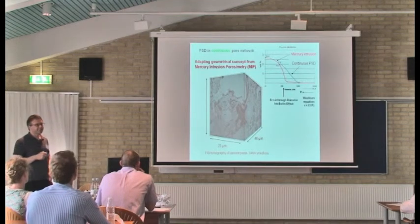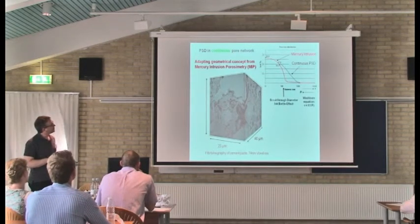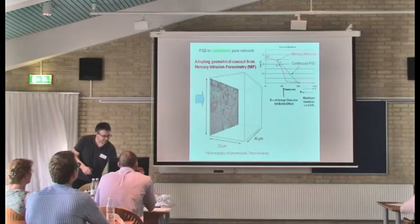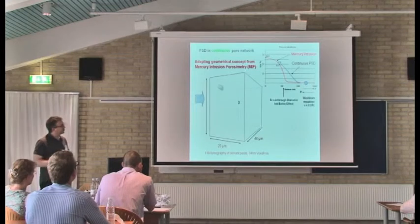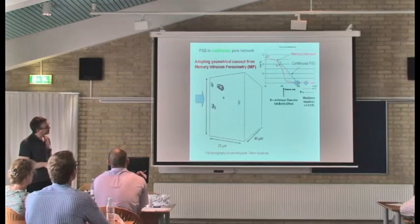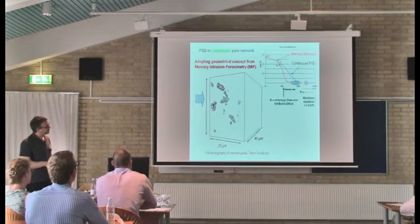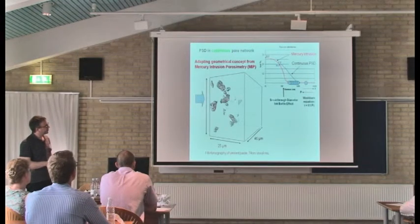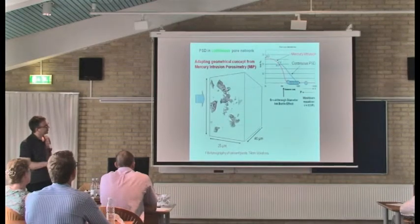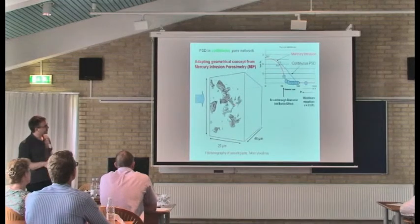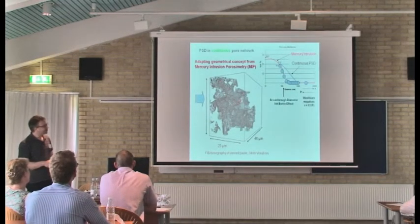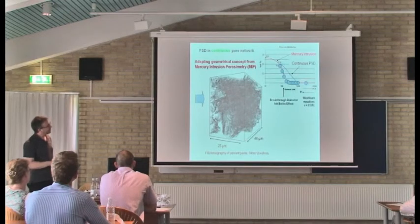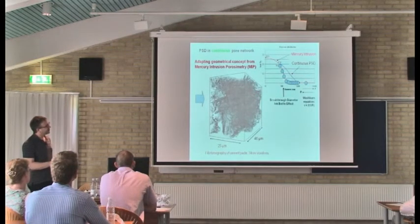How can we get size distribution information from continuous network structure? Here we are adapting geometrical concepts from mercury intrusion. Just to show you the principle, we can simulate the intrusion of mercury in the pore. We're simulating an increase of pressure, so smaller and smaller pores are filled. But the pore network is only intruded when we reach this breakthrough diameter. Then immediately the whole thing is flushed. That's the so-called ink bottle effect.